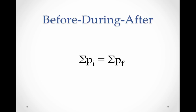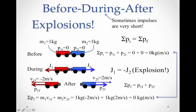Conservation of momentum is a great tool for studying interactions, especially ones that don't last very long — when the 'during' part is pretty quick. Maybe we know what happened afterwards but not during. Because we know what happened afterwards, we can predict what happened beforehand. For example, car crashes: we know what happens after the crash, but people often don't want to admit they were speeding. Conservation of momentum can tell us what happened beforehand because the total momentum in both cases should be equal.